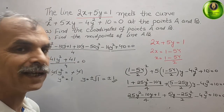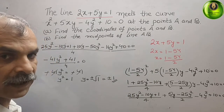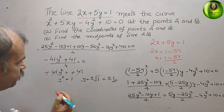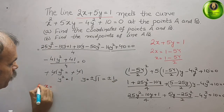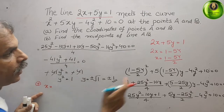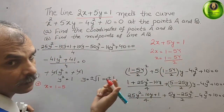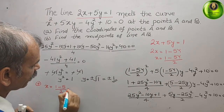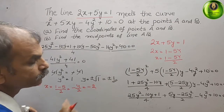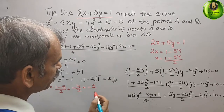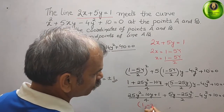Now substituting back to find x. Taking y = +1: x = (1 - 5×1) / 2 = (1 - 5) / 2 = -4 / 2 = -2. So the first coordinate is (1, -2)... wait, that gives the point (-2, 1).